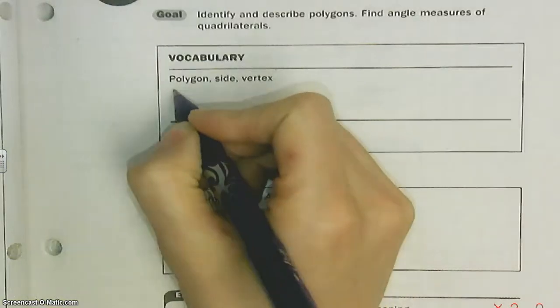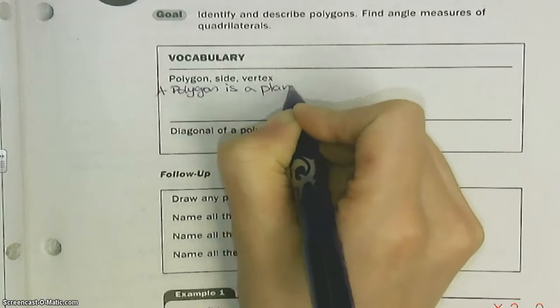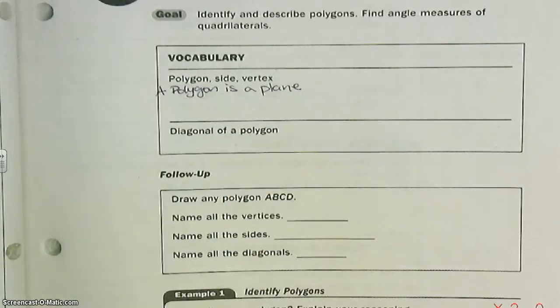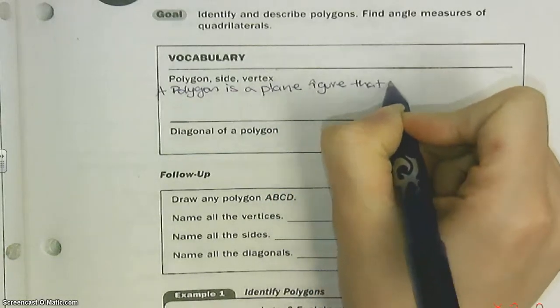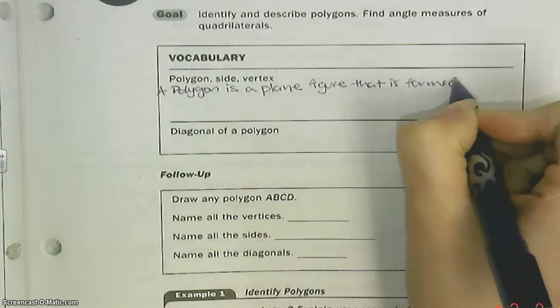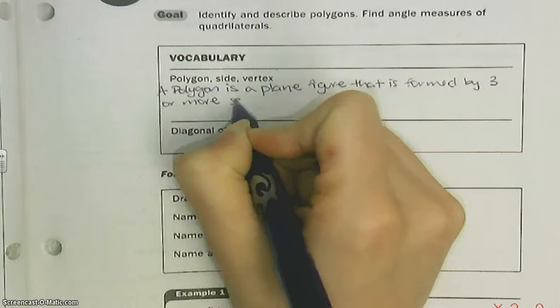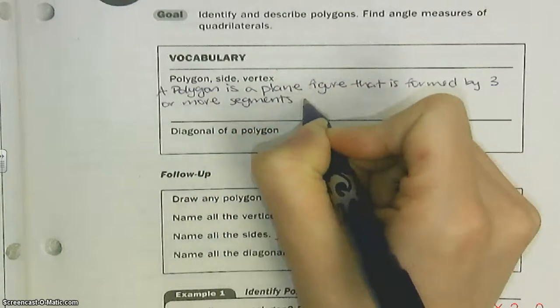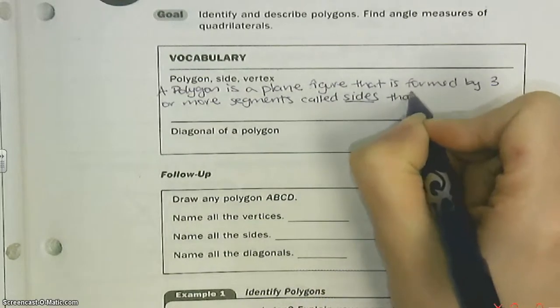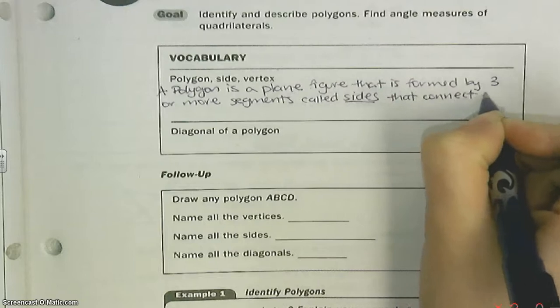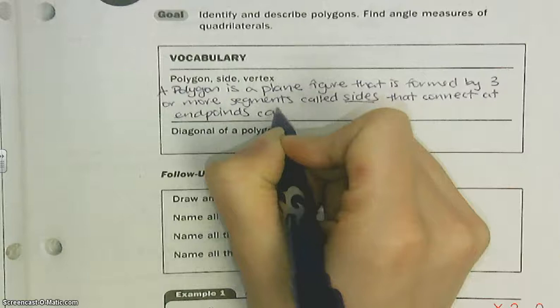A polygon is a plane figure. A polygon is plain—in plain I mean flat, not plain as in boring or simple, but plain as in flat figure that is formed by three or more segments called sides.